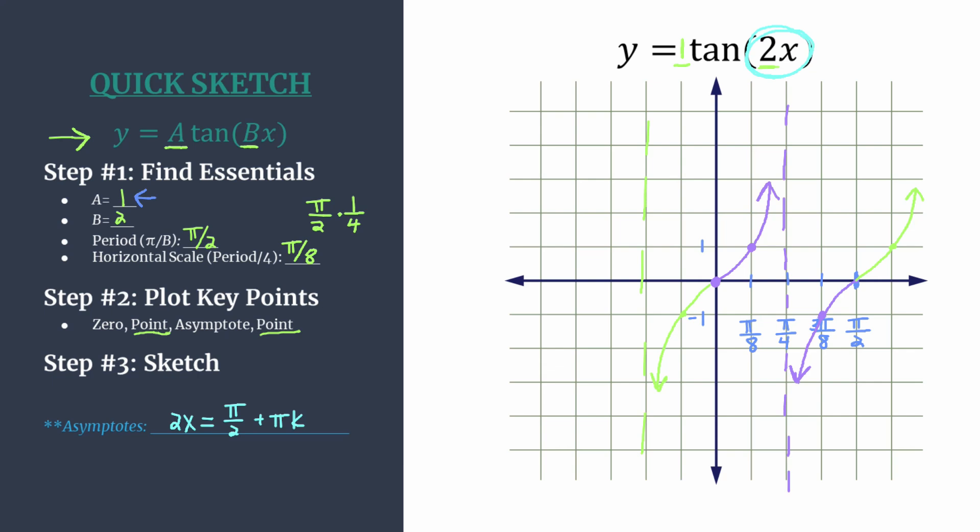Once you have this all you have to do is solve for x. So we're essentially going to divide everything by 2. Divide each term by 2 or multiply by 1 half if that helps you. And you can see that your asymptotes equation for this graph is x equals pi over 4 plus pi over 2 k. So if you substitute in 0 for k you'll see you find this first asymptote that we've graphed here, the one in purple. That's when k equals 0. You get x equals pi over 4.